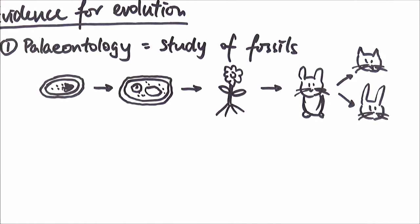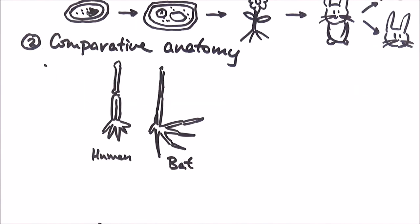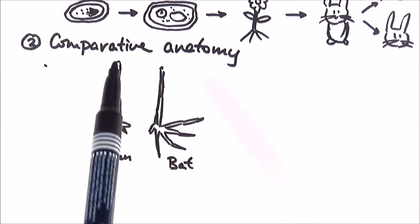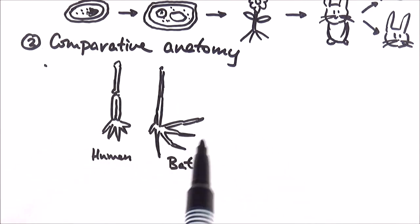However, there will be two other ways that we can provide evidence for evolution. And the second one is comparative anatomy. What we do in comparative anatomy is to look at the anatomical similarities or differences between organisms. Here, you can see that I've got a human arm, and then a bat's wing.